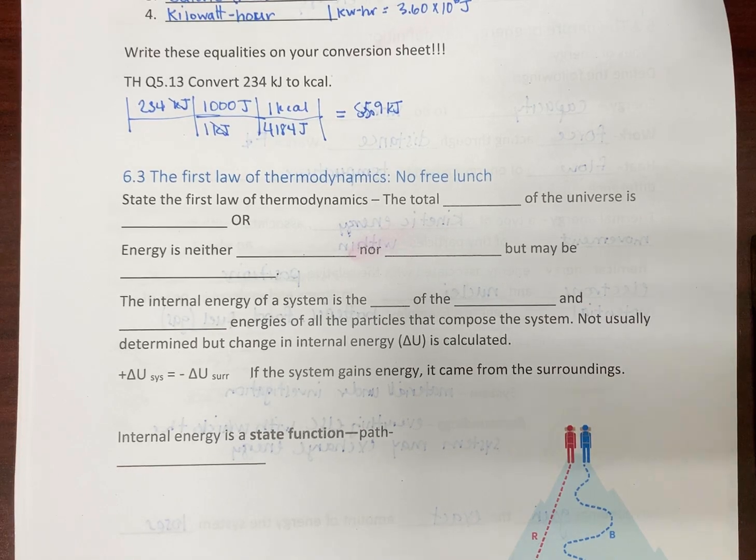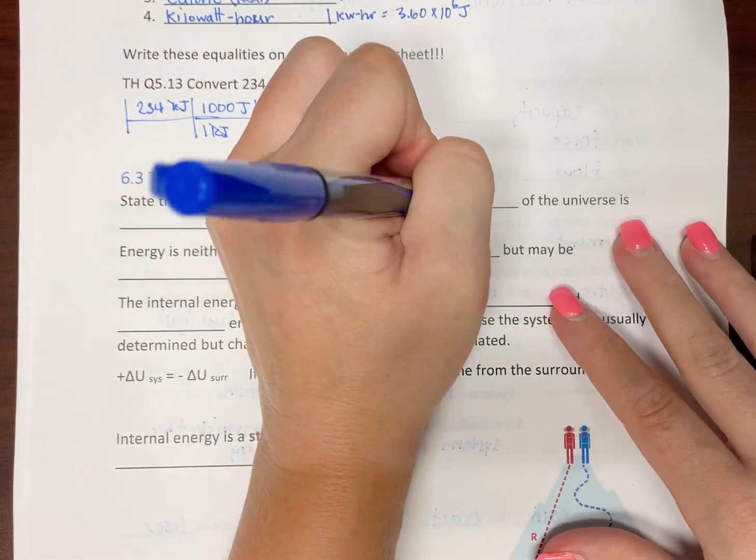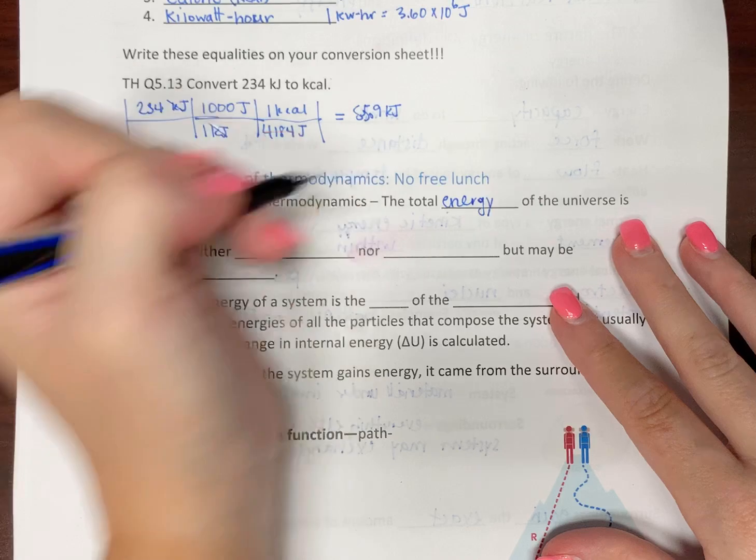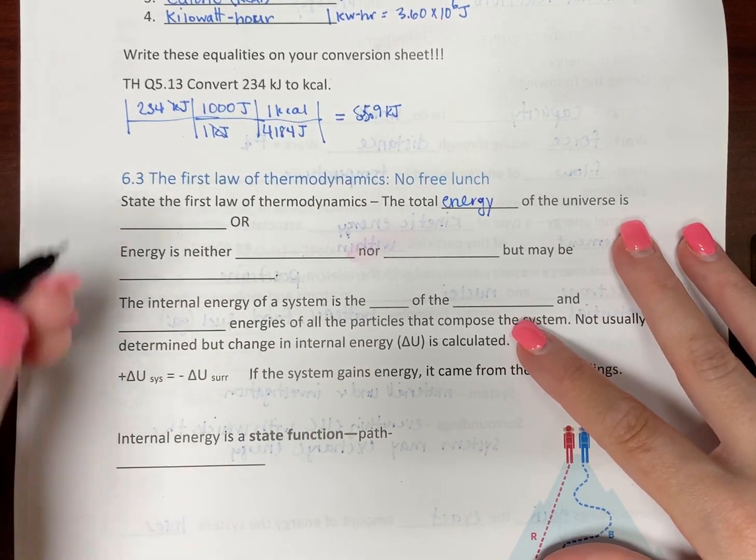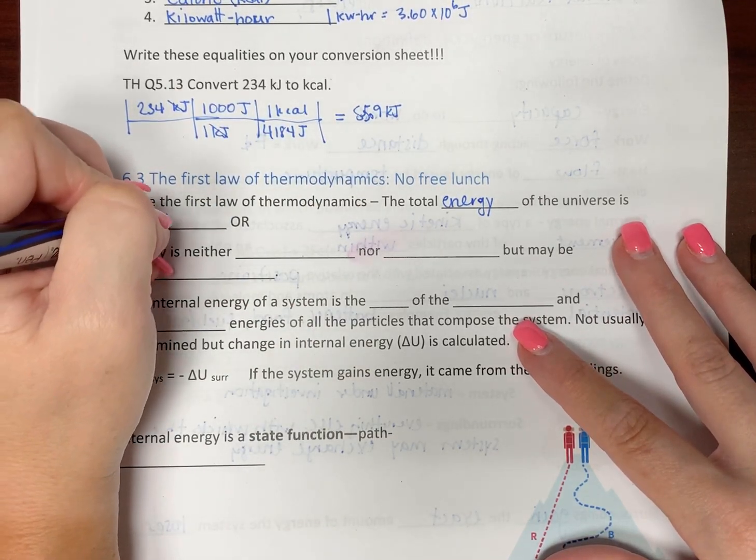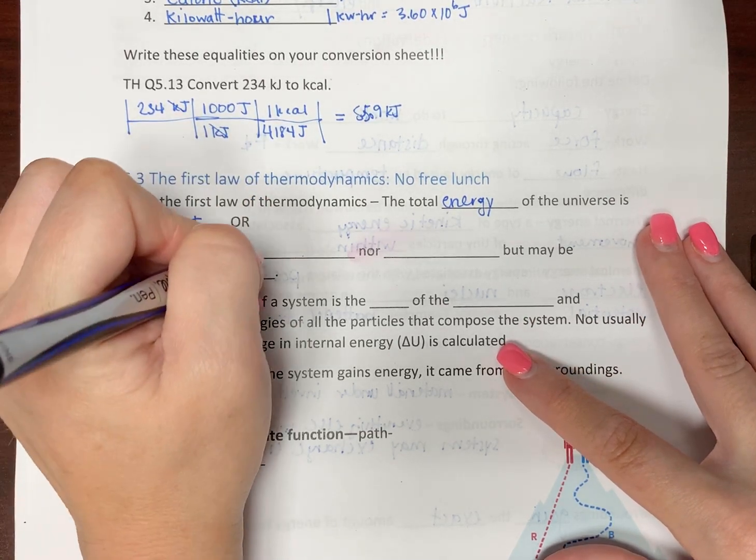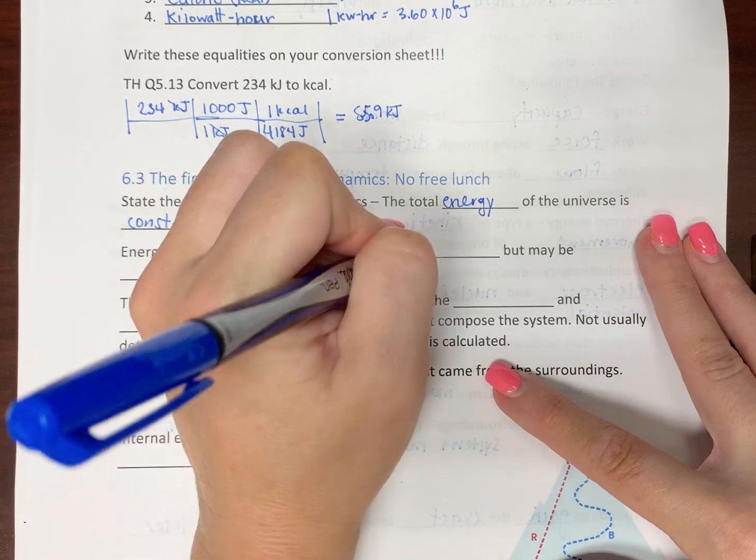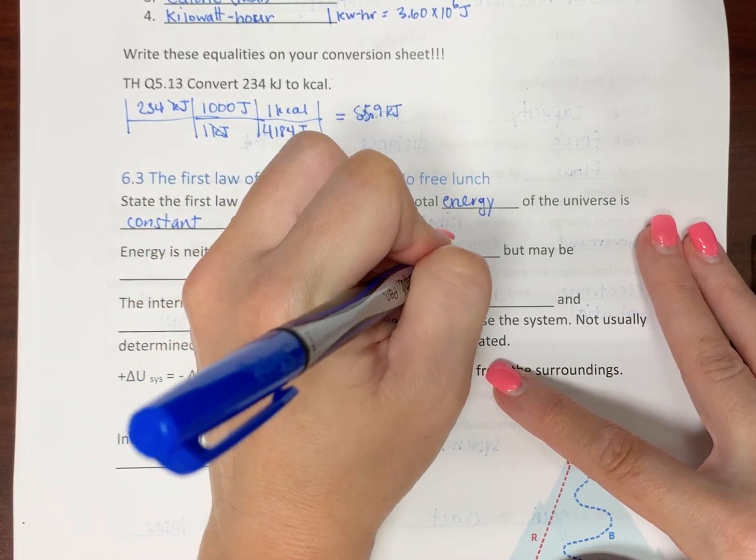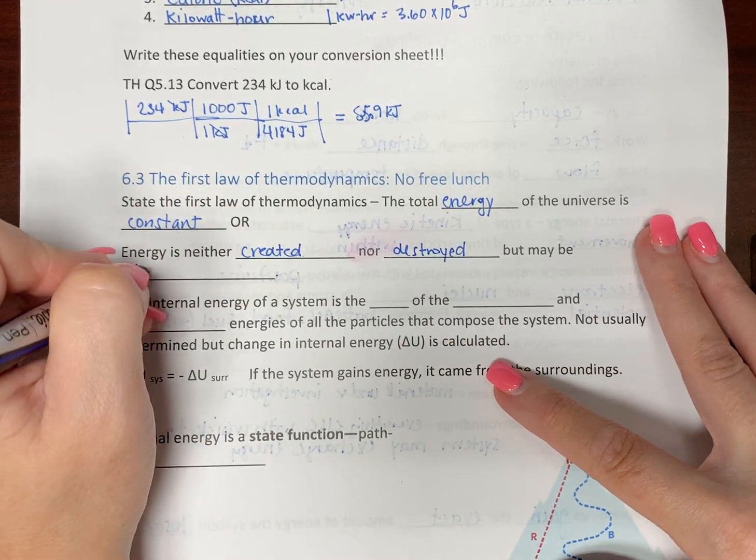Alright, the first law of thermodynamics. It is somewhat similar to the principle, if you've taken economics, of there's no such thing as a free lunch. So, what that says is the total energy of the universe is constant.